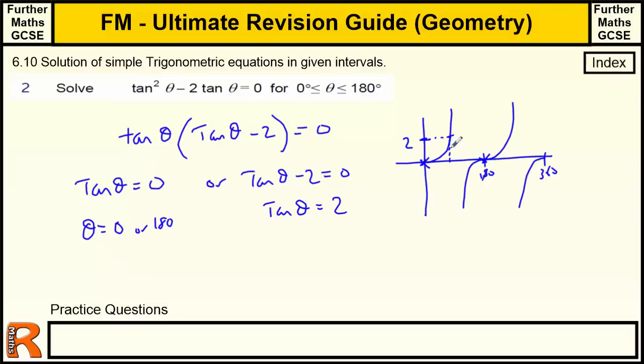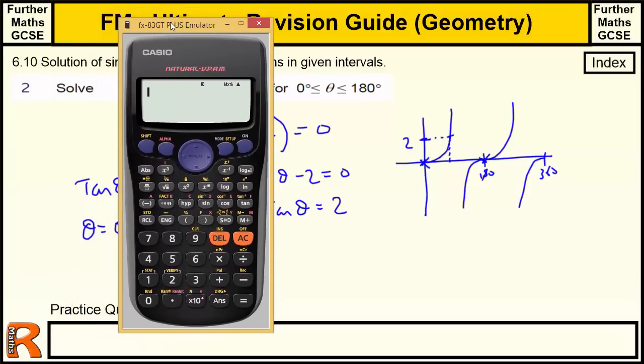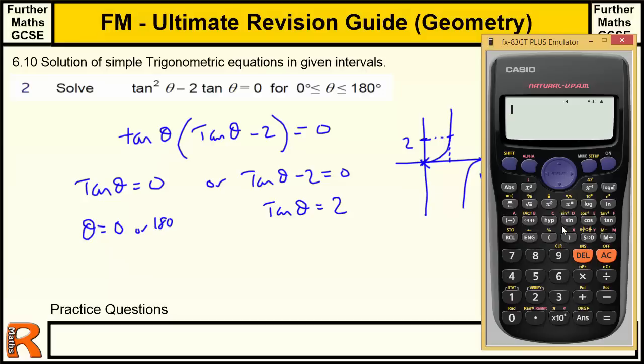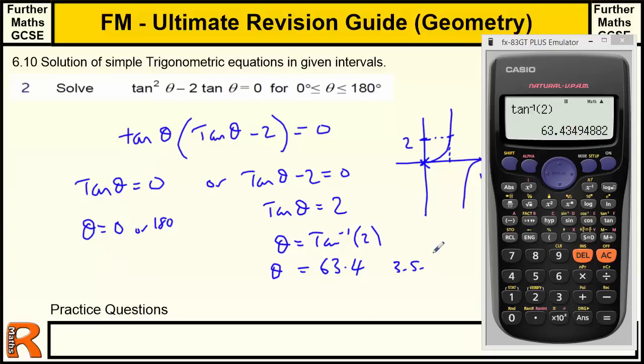We're just looking for that value there. There is only one value where it equals 2 between 0 and 180. There's another one here between 180 and 360. We're only doing the interval from 0 to 180. So we can use the calculator to get this value for 2. There's no standard value for that. So this would have to be a calculator question. We want the inverse tan of 2, and we get θ equals tan⁻¹ of 2, which is 63.4 to 3 significant figures.